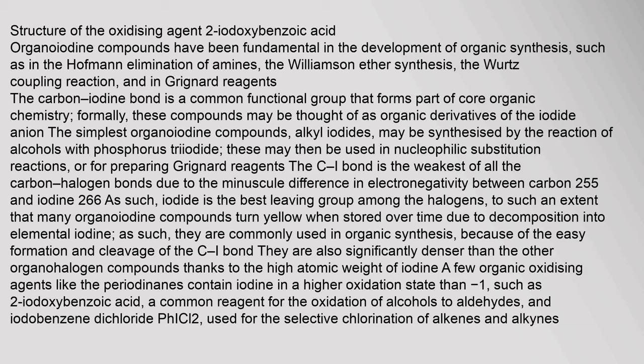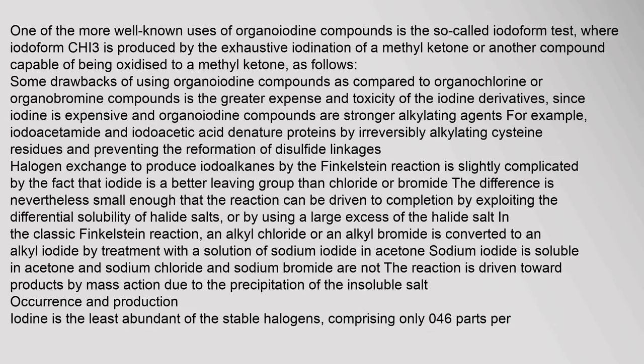A few organic oxidizing agents like the periodinanes contain iodine in a higher oxidation state than −1, such as 2-iodoxybenzoic acid (a common reagent for oxidation of alcohols to aldehydes) and iodobenzene dichloride (PhICl₂), used for selective chlorination of alkenes and alkynes. One well-known use of organoiodine compounds is the iodoform test, where iodoform (CHI₃) is produced by exhaustive iodination of a methyl ketone. Drawbacks of organoiodine compounds compared to organochlorine or organobromine compounds include greater expense and toxicity, since iodine is expensive and organoiodine compounds are stronger alkylating agents.